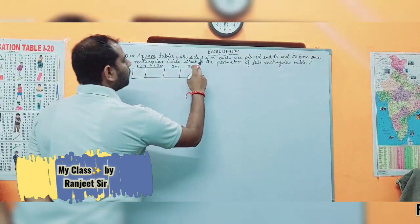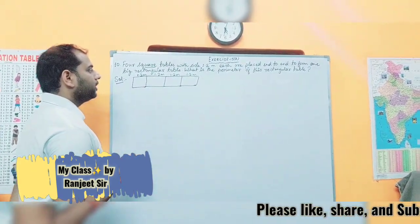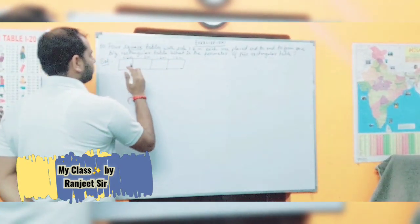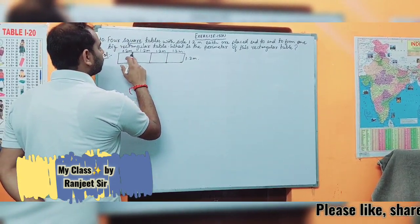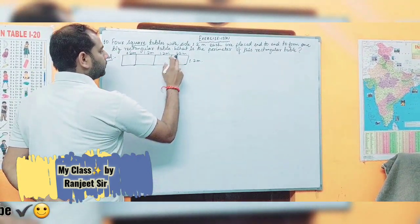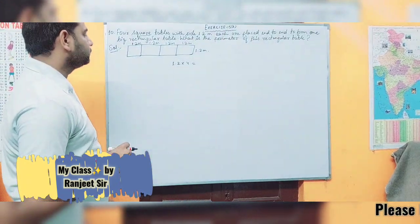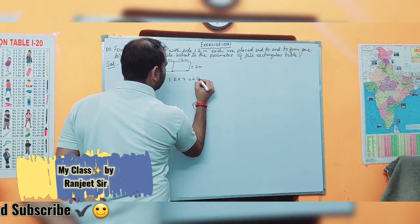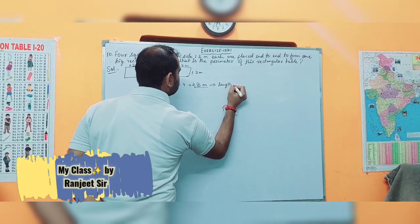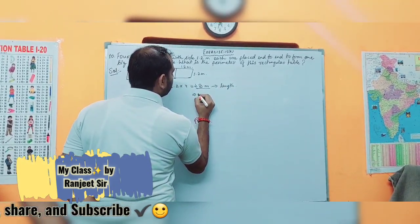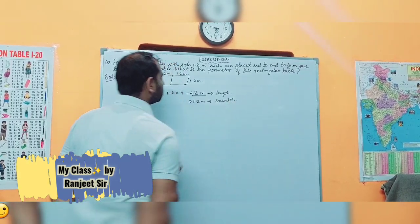Now the question is: what is the perimeter of this rectangular table? The length of the rectangle is 4 times 1.2 meter, which gives us 4.8 meter. That is the length. And the breadth is 1.2 meter — that is the breadth of the rectangular table.